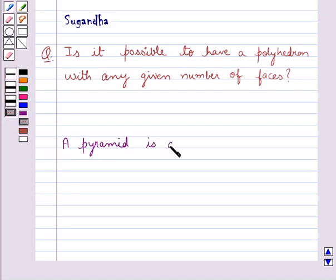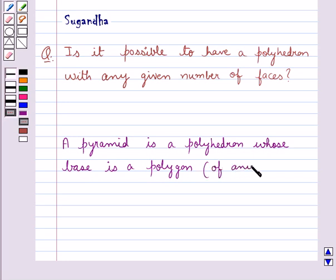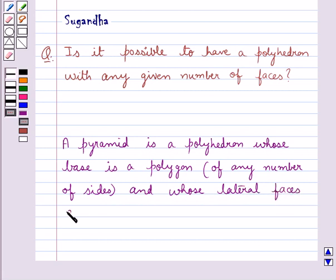a polyhedron whose base is a polygon of any number of sides, and whose lateral faces are triangles with a common vertex.